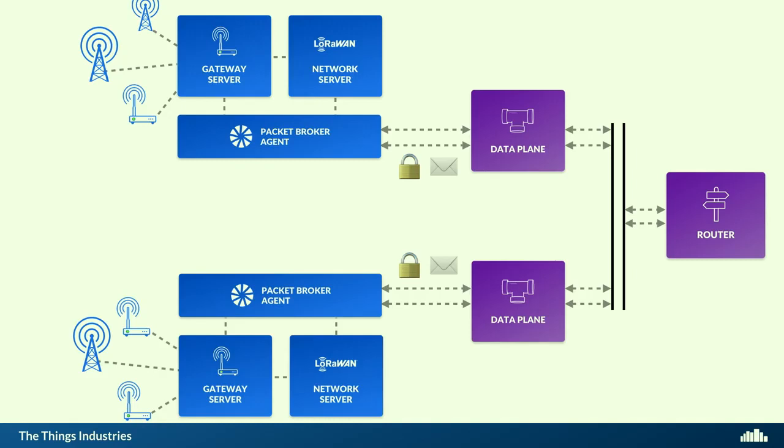Separating routing from clearing and billing means we have another component in between. All traffic sent to and from Packet Broker is encrypted by default. Before a forwarder sends a message to Packet Broker, it encrypts it with an encryption key, so Packet Broker cannot see what the traffic is about — it blindly routes it to the home network. The home network receives an encrypted packet and needs to obtain the encryption key to decrypt it. This is completely free — we don't impose any marketplace or billing model. If you want to exchange keys via a postcard, you can do that. Routing is completely separate and fully encrypted.